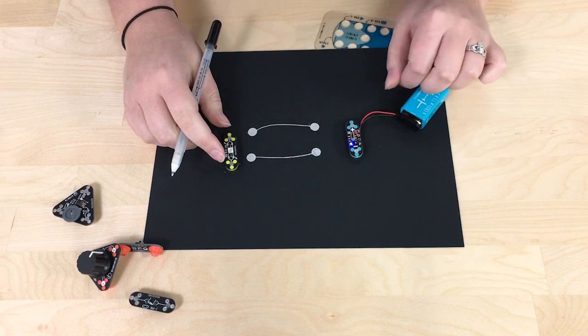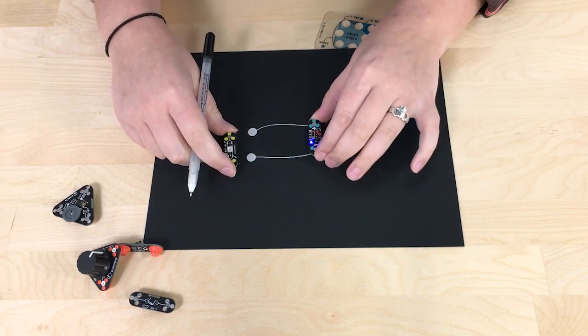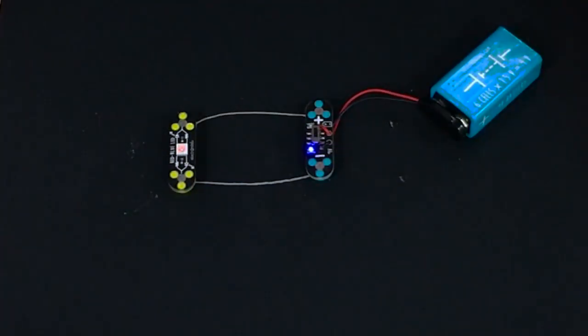Now turn the battery on. The blue light means it's on. Snap them in place and I have a working circuit.